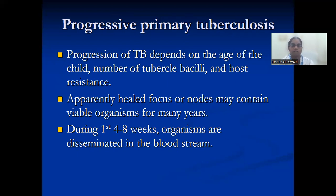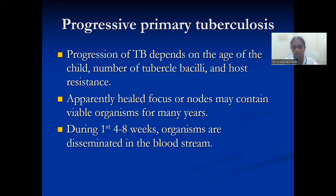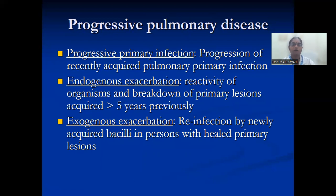The progression of primary tuberculosis depends upon the age of the child, the number of tubercle bacilli, and host resistance. Apparently healed foci or nodes may contain viable organisms for many years. During the first 4 to 8 weeks, organisms are disseminated in the bloodstream. Progress of pulmonary disease includes progression of recently acquired primary infection. Endogenous exacerbation can also occur, as well as exogenous exacerbation by reinfection with a newly acquired strain.